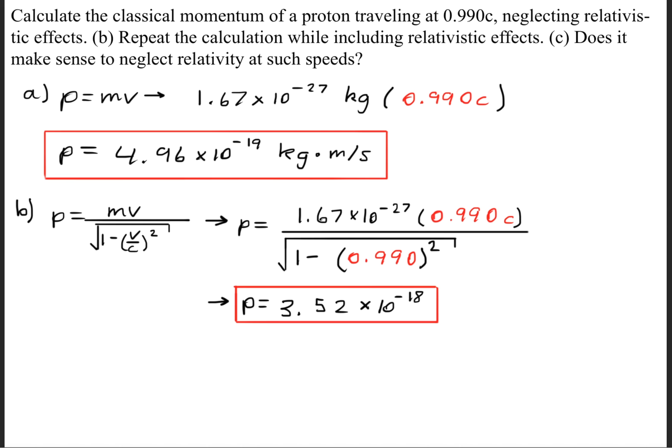Part C, the answer is no. The reason why is this proton is traveling so fast, so fast close to the speed of light. And the speed of light is 3 times 10 to the eighth meters per second. That is incredibly fast. And for a particle to be moving that fast, neglecting relativity totally distorts the actual answer.